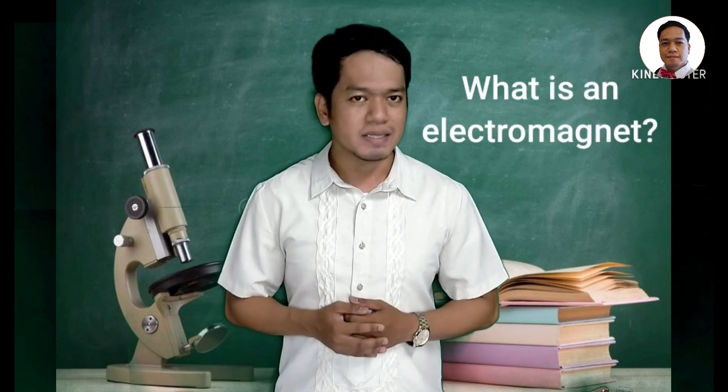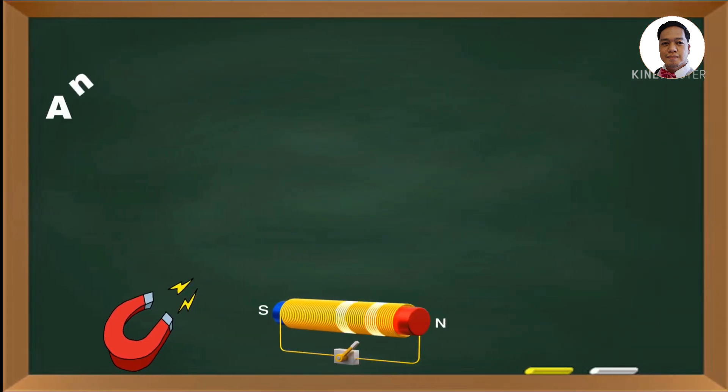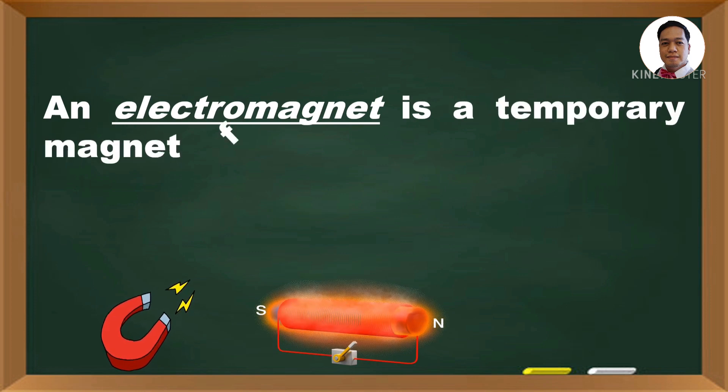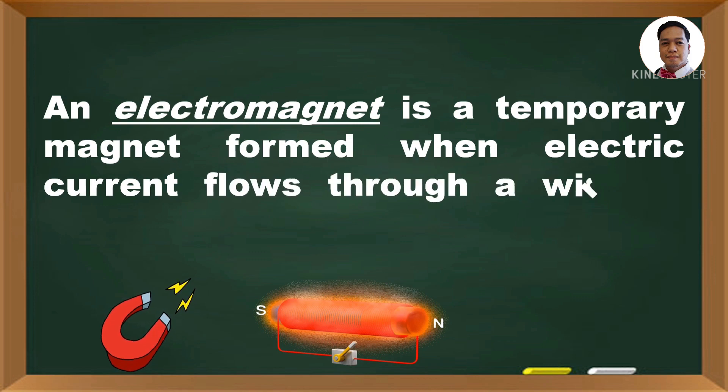So, what is an electromagnet? An electromagnet is a temporary magnet formed when an electric current flows through a wire or other conductor.